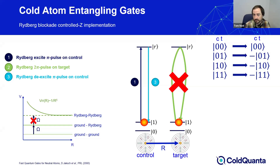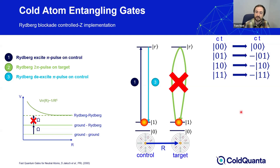For the 1,0 state, we also get a minus sign because the control atom traverses a path up and back down from the Rydberg state, but the target atom pulse is off-resonance so nothing happens — just a single minus sign. Finally, when we send in state 1,1, we get the blockade effect: the control gets a Rydberg excitation, then we attempt to excite the target, but the Rydberg blockade has pushed the doubly-excited state out of resonance with the 2π pulse. So when we attempt that 2π pulse, nothing happens. We de-excite the control atom — incurring a minus sign — but because of the Rydberg blockade we don't get two minus signs. The result is as shown.